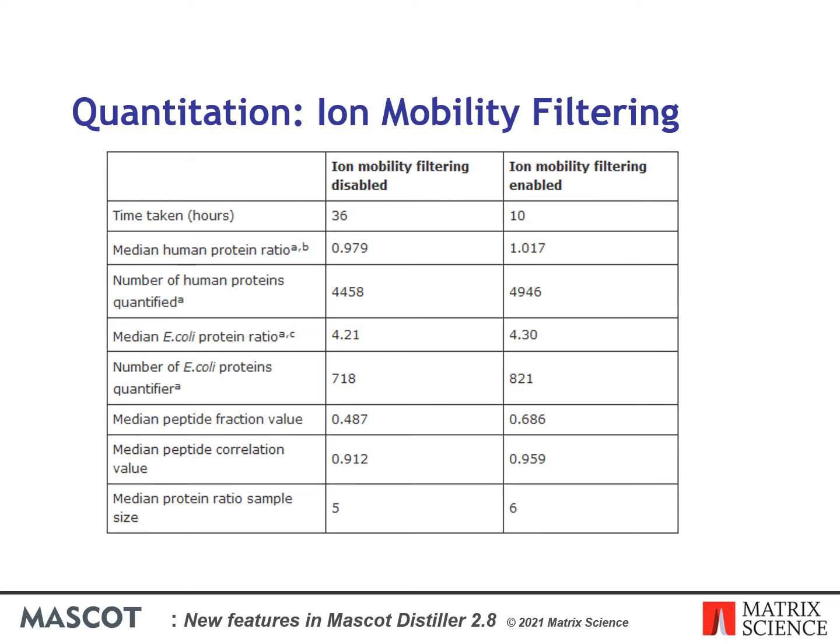The median protein ratios for both human and E. coli proteins are also slightly closer to their expected ratios.